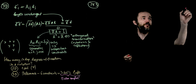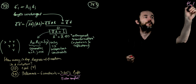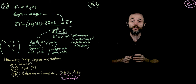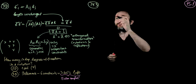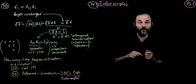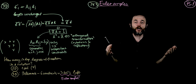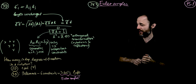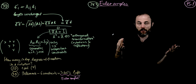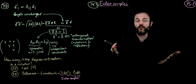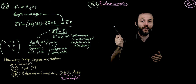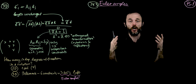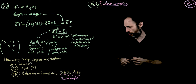Hello and welcome to lecture 15 of our classical mechanics course. Today we're going to be talking about Euler angles. There are three of them, and they are designed to describe the orientation of a body in three-dimensional space. The Euler angle approach describes the position of a coordinate system relative to a fiducial one.